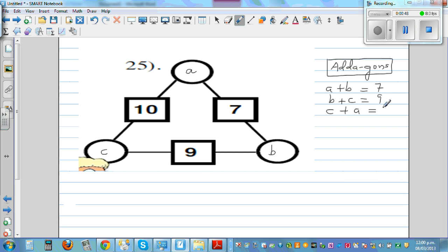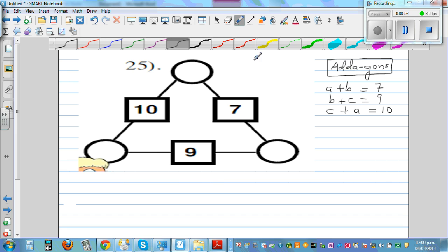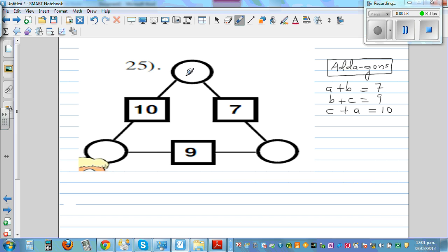So those are three equations if you want to do algebra. Let's do without algebra first. Let's think of two numbers that add to 7. Let's start with 2 and 5. If you write 5 here, 5 plus what gives you 9? 4. But 4 plus 2 is not 10, so this is not right.